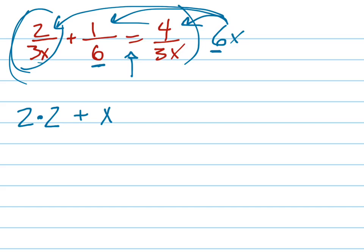And when I multiply the 6x times this side, the 3x cancel, and I just get 2 times 4, which is 8.